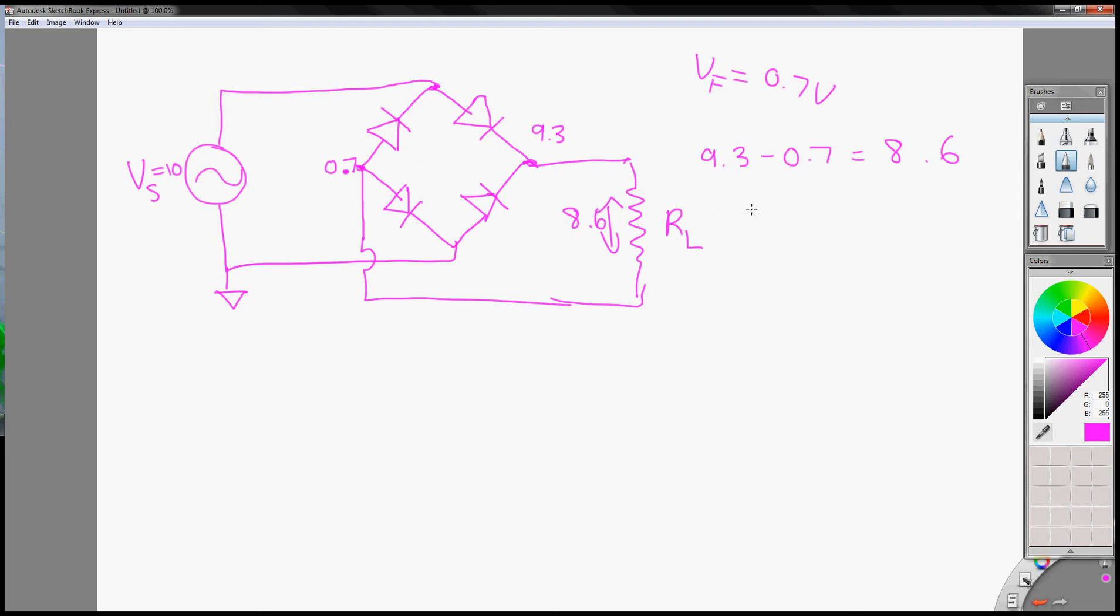So what does that mean? That means the total voltage drop required, VF total required is 1.4, at least 1.4 volts, for this circuit to be active.